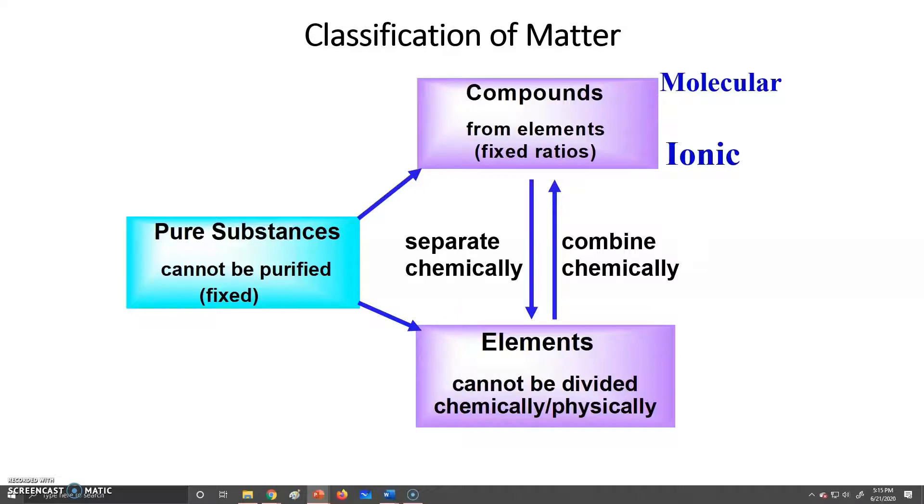We can further characterize pure substances as either compounds or elements. A compound is anything that's made up of more than one atom bonded together, can be from one element or different elements. Whereas an element is the most basic unit of matter, and we can't break that down.